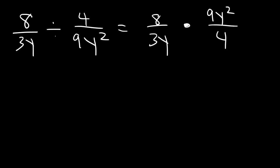Now let's work on another similar problem. Let's divide 8 over 3y by 4 over 9y squared. So based on the last example go ahead and work on this one. So we're going to follow the same process. We're going to keep the first fraction the same and we're going to change division to multiplication and then we're going to flip the second fraction. Now you can multiply across or you could simplify first. In this case I'm going to simplify first.